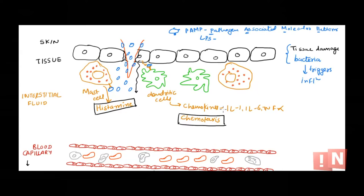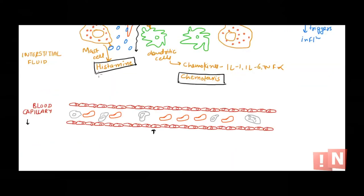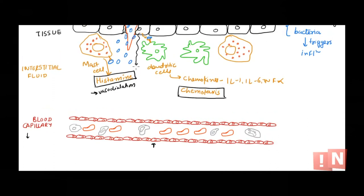Mast cells get activated and release histamine; dendritic cells get activated and release chemokines — the main function here is chemotaxis. Now in the second phase: what will histamine do? It will cause vasodilation — it increases the diameter of the nearest blood capillary of the affected area. We need lots of immune system cells to come to this area and fight against the pathogen and help repair it. Histamine also increases capillary permeability.